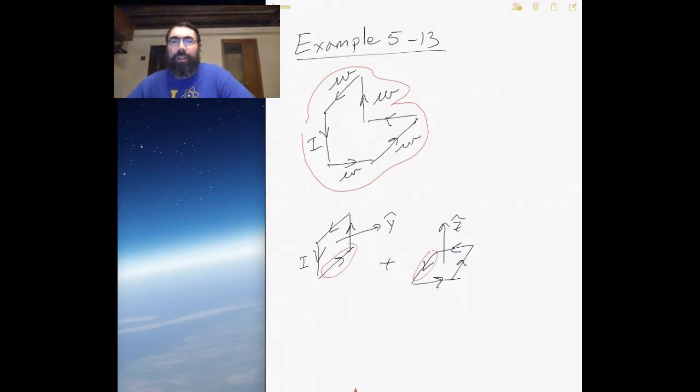The interesting thing is if I add these two together, then this current and this current cancel each other out. So a superposition of those two loops, because the current is flowing in opposite directions, basically gives you this region right here.